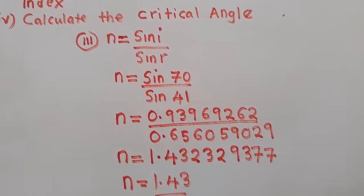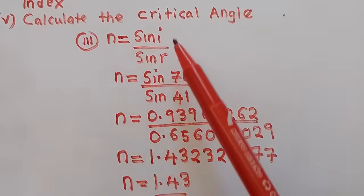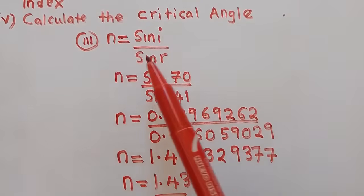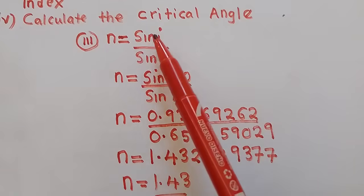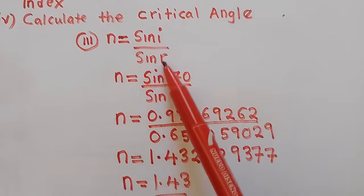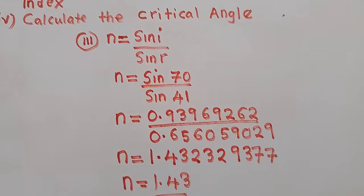If you are asked to define the refractive index, we use the same formula: the refractive index is the ratio of the sine of the angle of incidence to the sine of the angle of refraction. Once you know the formula, you know its definition.